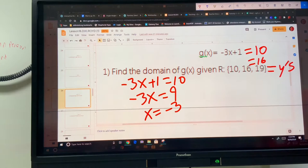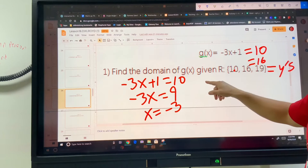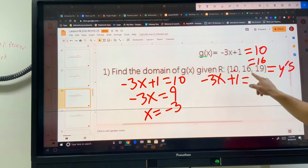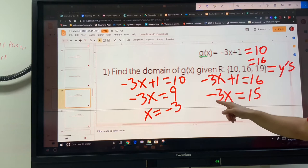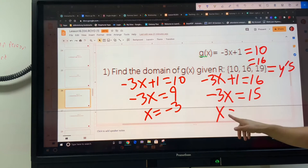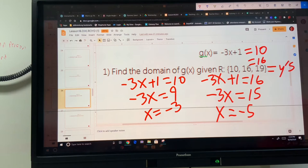If I divide both these sides by negative 3, we get 3 as the answer for that specific range. Now let's do it again with 16. Negative 3x plus 1 equals 16. We're going to subtract the 1 first. Then we're going to divide by negative 3. If I divide by negative 3 on the left, it just goes away. If I divide by negative 3 on the right, I'm going to get negative 5. There's the second answer.